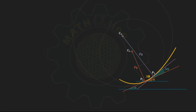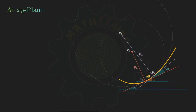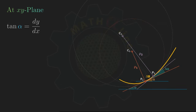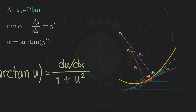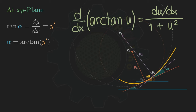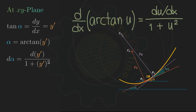From analytic geometry, the slope m of the line is equal to the tangent of inclination alpha, and in calculus we call that dy over dx, denoted with y prime. Therefore, alpha is equal to the arc tangent of y prime. Let us differentiate both sides of this equation. Recall the formula for the derivative of arc tangent of u, which is equal to du all over 1 plus u squared. Therefore, d alpha is equal to dy prime over the quantity 1 plus y prime squared.